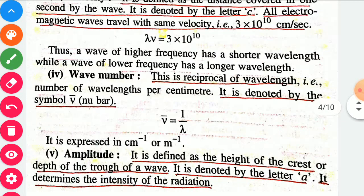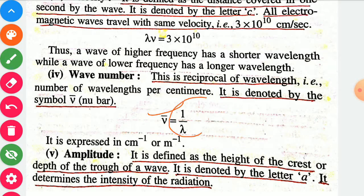Next point is wave number. Wave number is indicated by nu-bar. It is defined as the reciprocal of wavelength, that is the number of wavelengths per centimeter, known as wave number. Therefore, wave number nu-bar equals 1 divided by lambda. It is expressed in per centimeter or per meter.